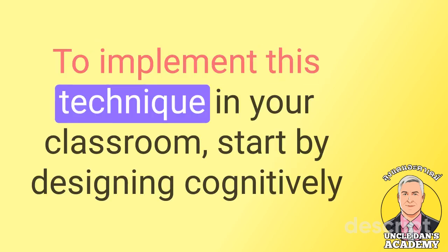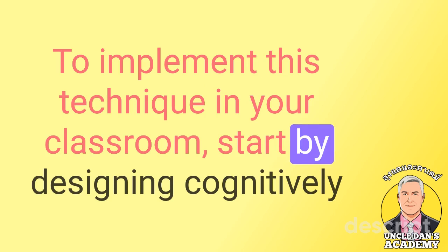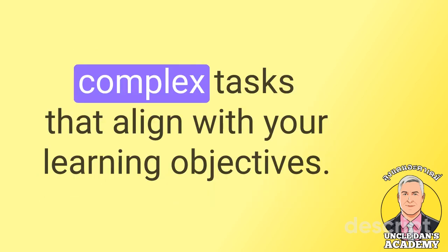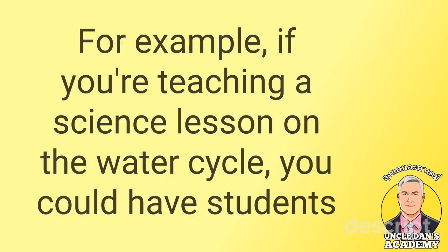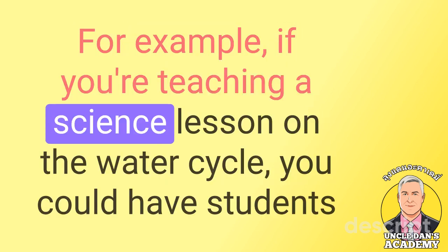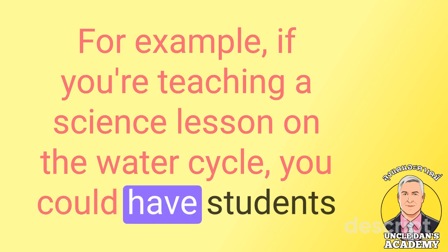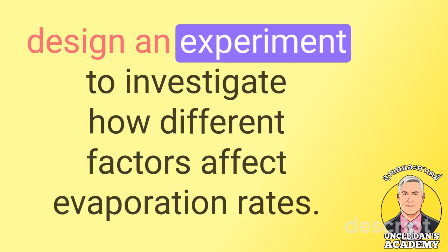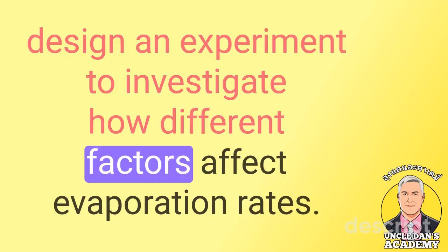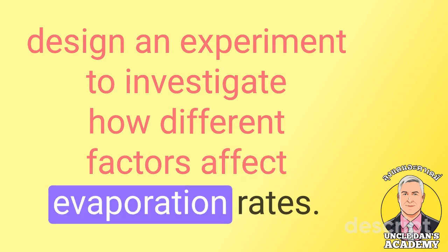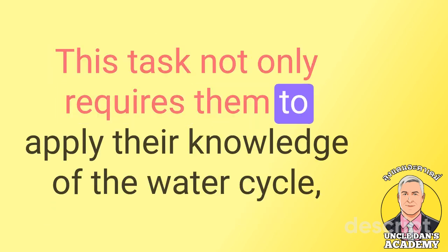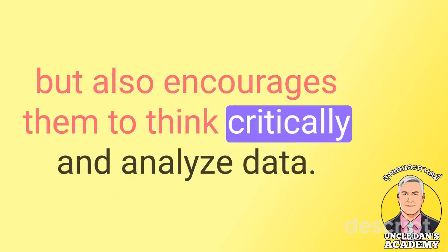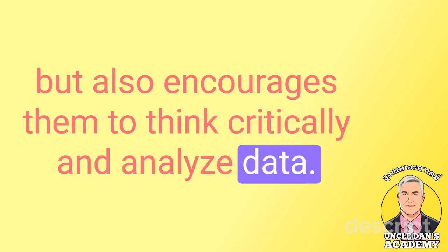To implement this technique in your classroom, start by designing cognitively complex tasks that align with your learning objectives. For example, if you're teaching a science lesson on the water cycle, you could have students design an experiment to investigate how different factors affect evaporation rates. This task not only requires them to apply their knowledge of the water cycle, but also encourages them to think critically and analyze data.